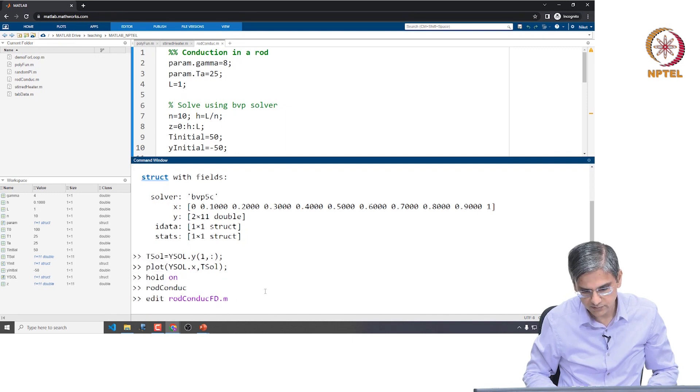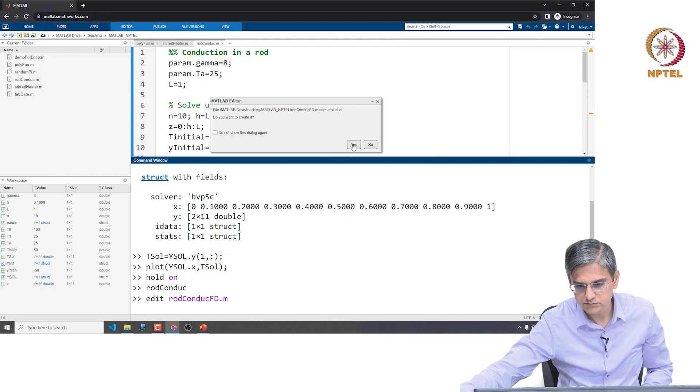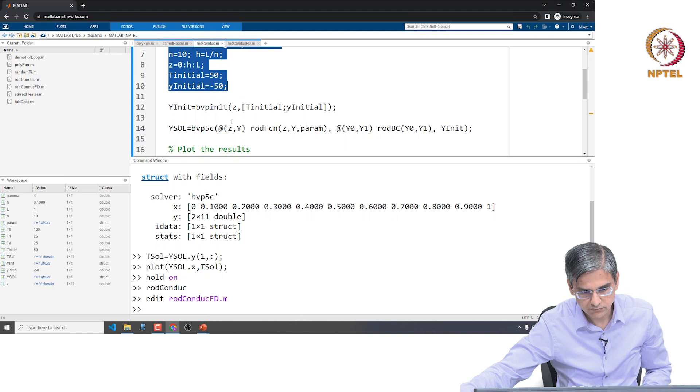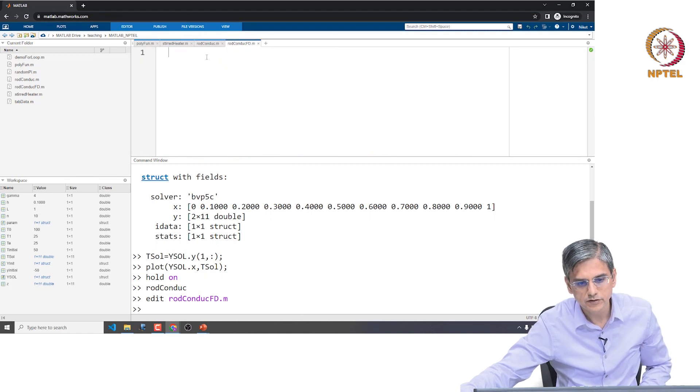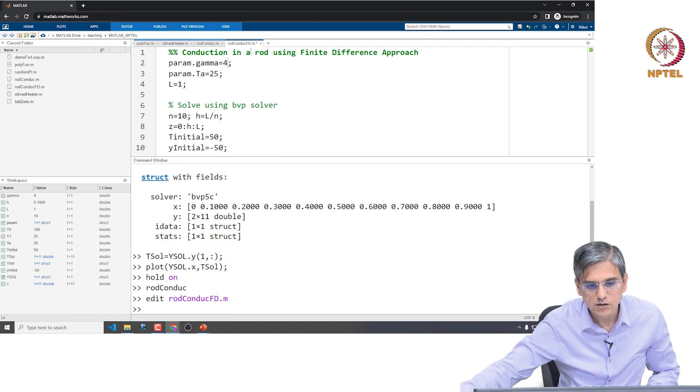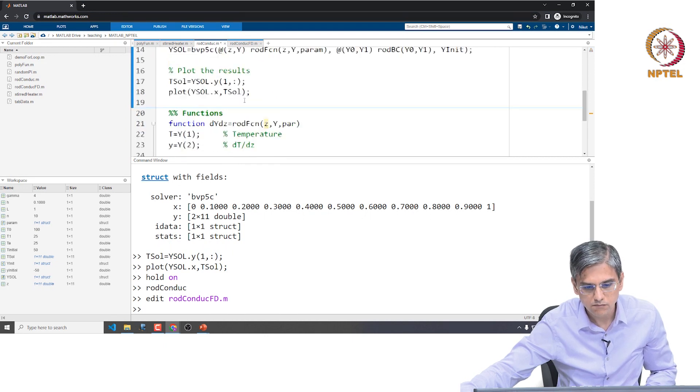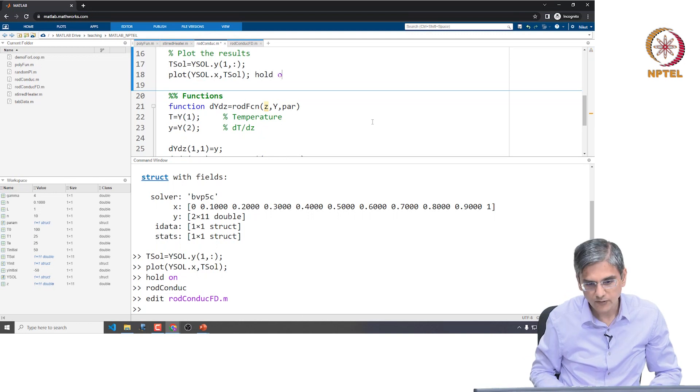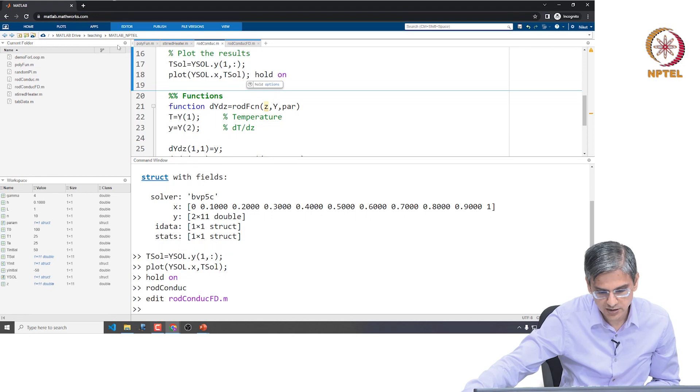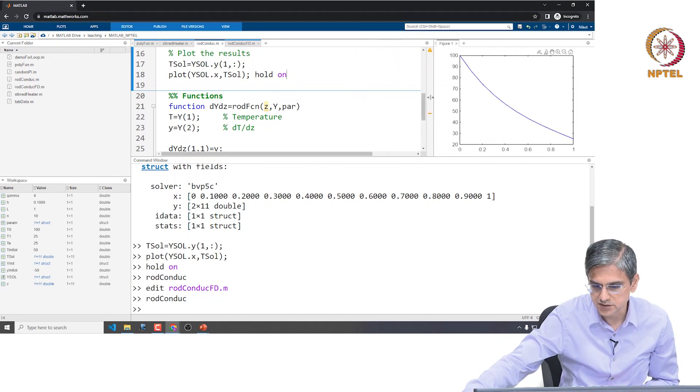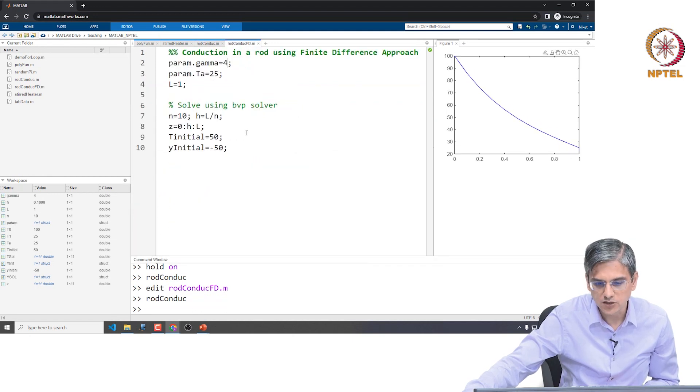This is from the previous video, let me close this. Rod Gundak FD, let me call that. Let me copy this. We have changed gamma back to 4. Let me save this and let me run this. This was what we did in the previous video. Let me run this and have the solution for us. This is the solution.